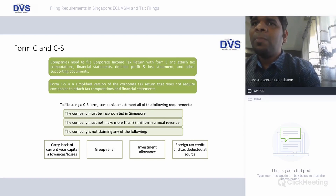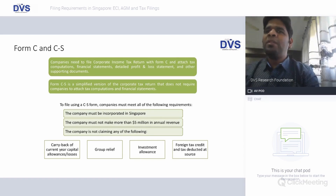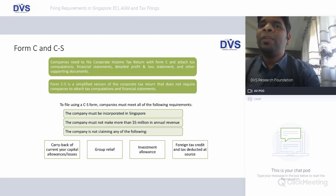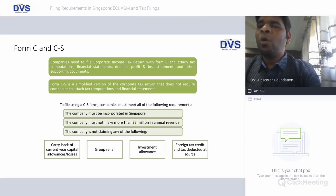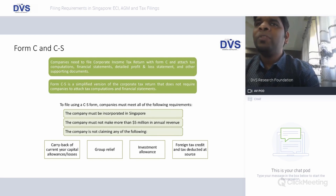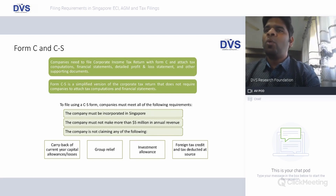Form C is a generalized form that applies to all companies, but companies that meet the following criteria can use Form CS: the company must be incorporated in Singapore, must not have more than five million in annual revenue, and must not be claiming any group relief, carry-back of current year capital allowances or losses, investment allowance, foreign tax credit, or deductible tax at source. If the company is not claiming any of these, it can file Form CS.